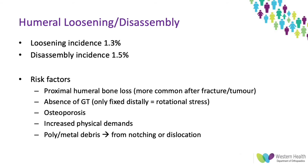Moving on to humeral loosening — the incidence is about 1.3% for loosening and 1.5% for disassembly. Risk factors include humeral bone loss, which reduces soft tissue tension and increases rotational forces on the stem. Absence of the greater tuberosity means the stem is only fixed distally with no resistance to rotational stresses. Osteoporosis, physically demanding or younger patients, and poly and metal debris from notching or multiple dislocations can also contribute — the latter leading to a pseudotumor or osteolytic picture.